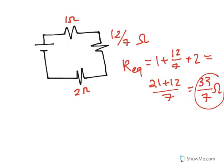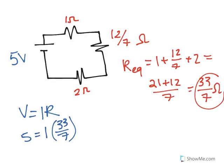So I just found that the equivalent resistance is 33 over 7 ohms, and now I'm just going to plug that into Ohm's Law to find the current. Remember that we're using a battery of 5 volts here, so we're going to have 5 is equal to the current times 33 over 7, and we're just going to divide.